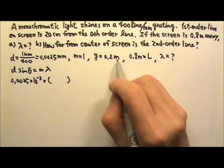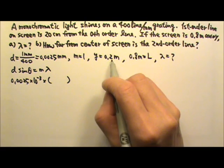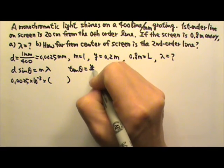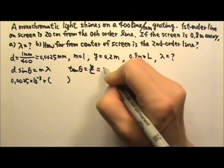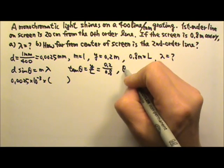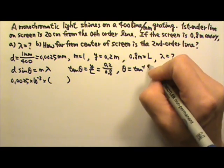But now the Y is not much smaller than L. Therefore, I have to use tan theta equals to Y over L. So tan theta equals to Y over L. That means the angle theta is inverse tan 0.2 over 0.8.